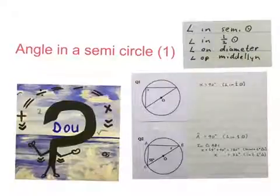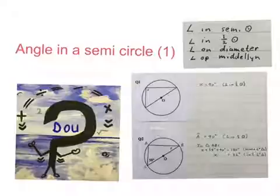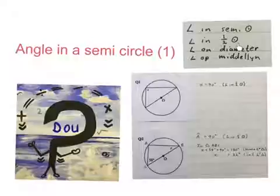Good day. In this video we're going to look at the theorem angle in a semicircle. We're going to do four riders, four sums that use angles in a semicircle. The four words we can use as our reasoning: we can say angle in a semicircle, angle in half a circle, or angle on diameter. Just choose one of the three, get used to it and leave the others.